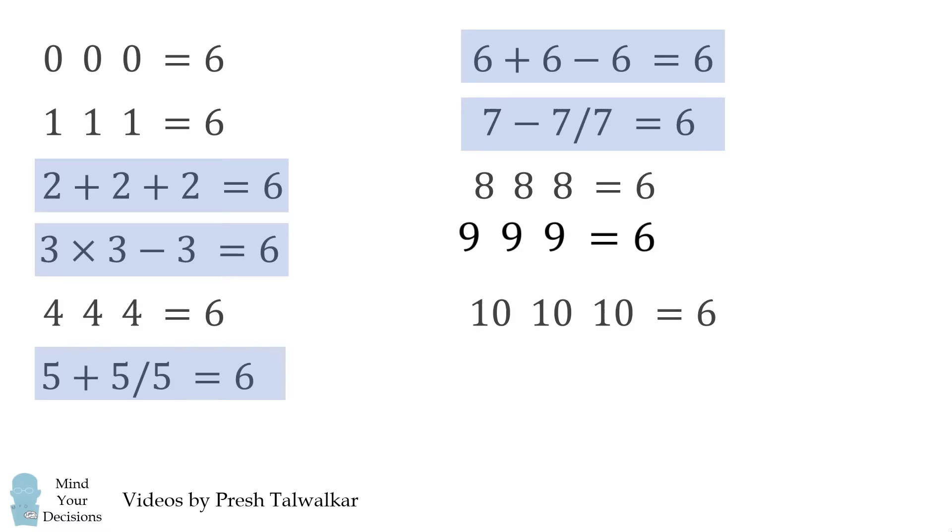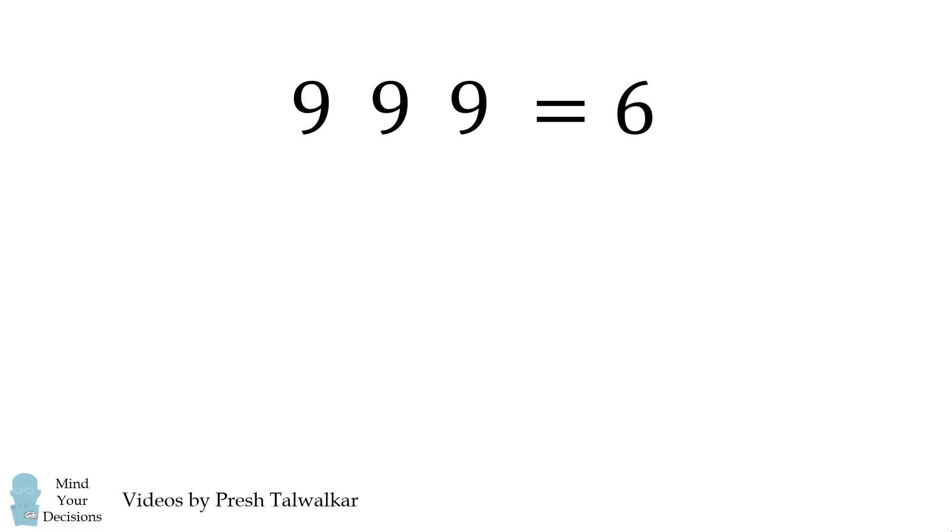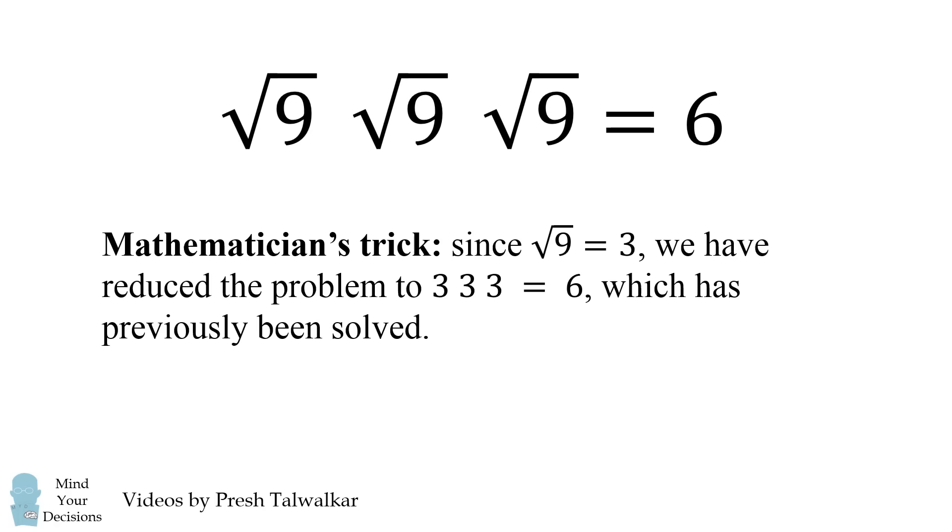Now, let's solve 9 9 9 is equal to 6. Well, one trick we can use is let's take the square root of each of these 9's. Here's a handy mathematician's trick. Since the square root of 9 is equal to 3, we have reduced the problem to solving 3 3 3 is equal to 6. And this problem has previously been solved.